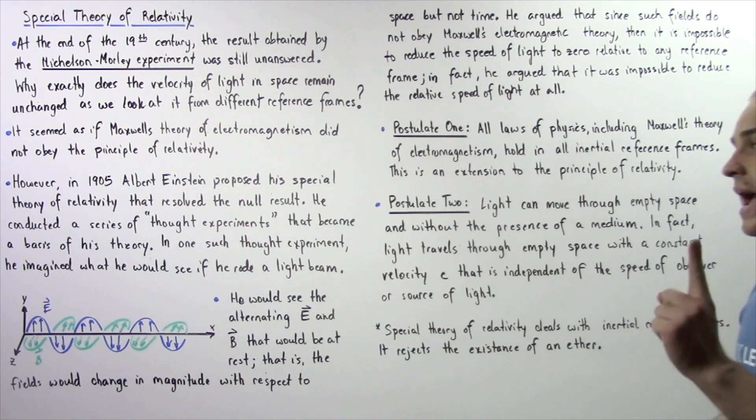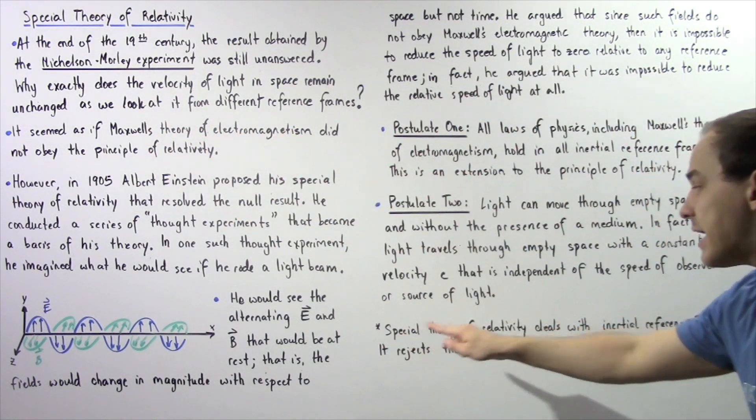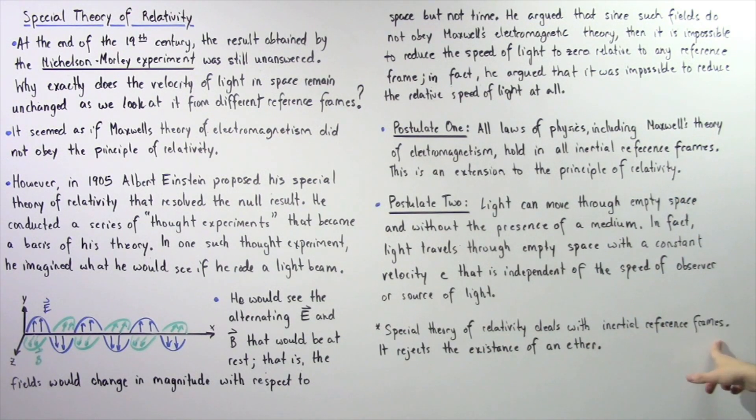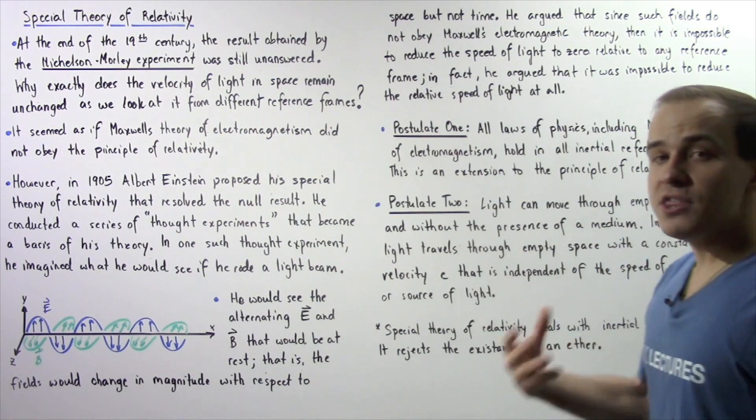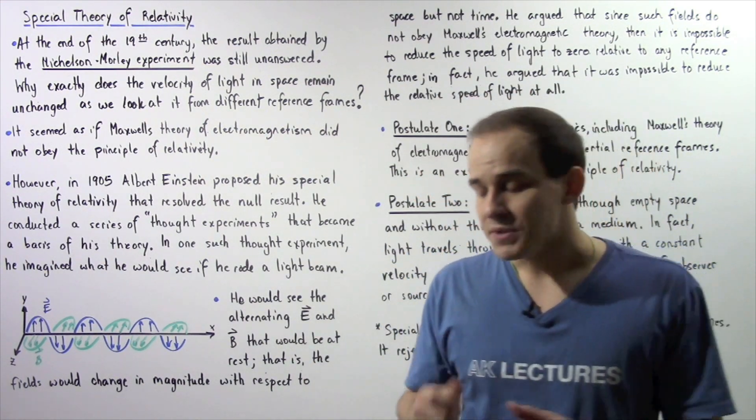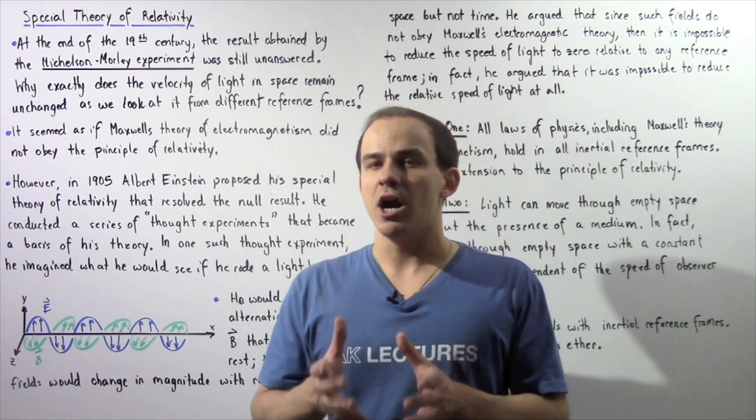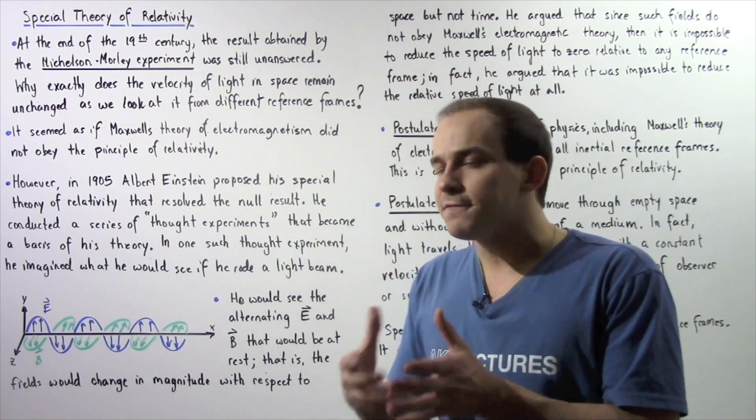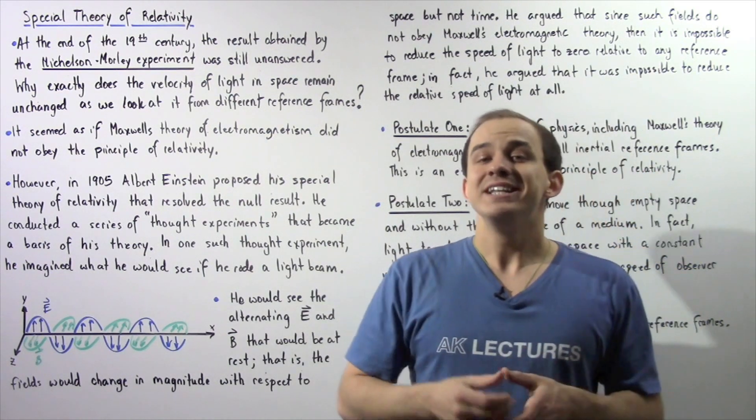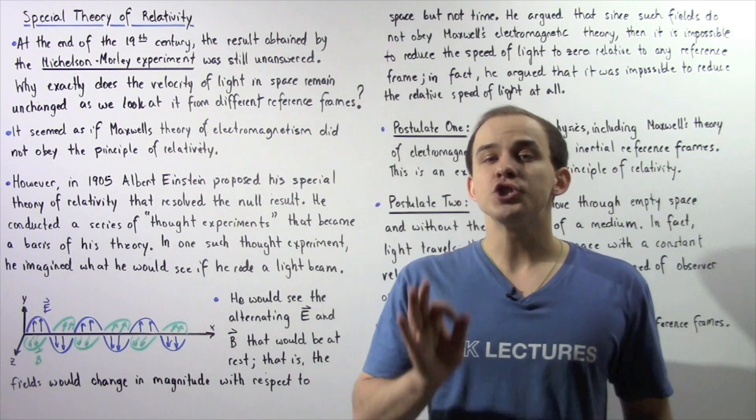Now one important note has to be made about the special theory of relativity. The special theory of relativity deals with inertial reference frames, reference frames that are stationary or which are moving with a constant velocity. In a future lecture, we're going to discuss the general theory of relativity, which is different from this theory. The general theory of relativity deals with non-inertial reference frames, reference frames which are accelerating.